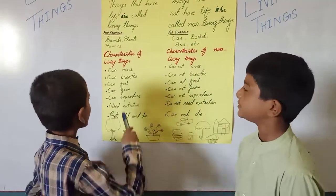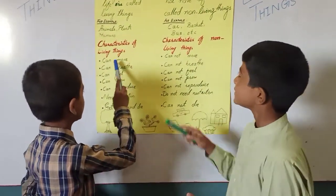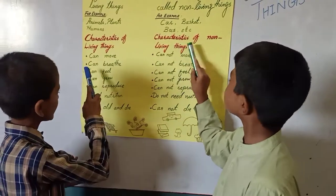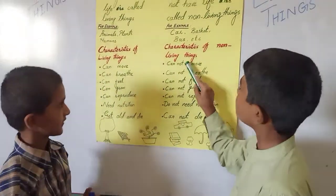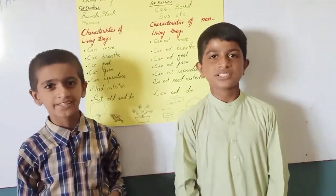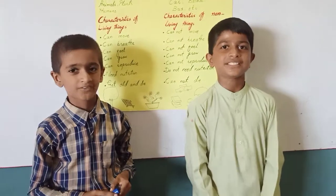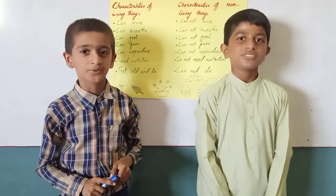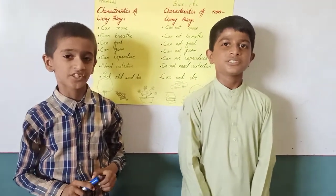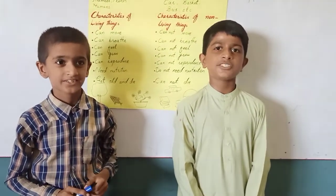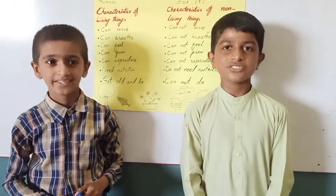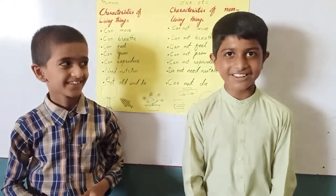Practice of Living Things versus Practice of Not Living Things: Living things can move; not living things cannot move. Living things can breathe; not living things cannot breathe. Living things can feel; not living things cannot feel. Living things can reproduce; not living things cannot reproduce. Living things need nutrition; not living things do not need nutrition. Living things grow old and die; not living things cannot die.